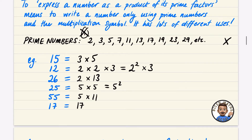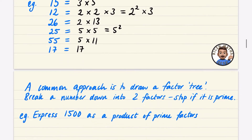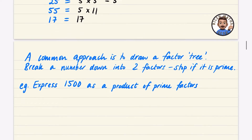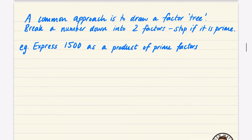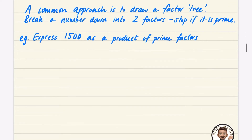In practice, they won't ask you to find prime factorizations of such small numbers — they usually go with bigger ones. A common approach for larger numbers is to draw a factor tree: break a number down into two factors, and stop when you reach a prime number.